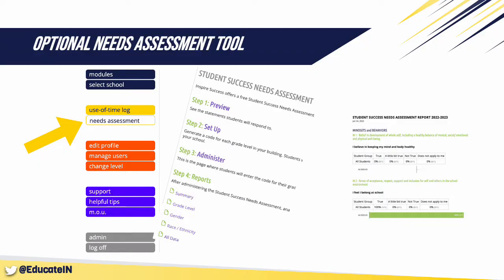Schools often use surveys or needs assessments to gather this type of supplemental data. Some use vendor surveys or even a locally created survey or needs assessment, and your school may have some results you can use readily. You may also have information from your teachers or parents. However, there is an optional student needs assessment that you can use within our online platform.